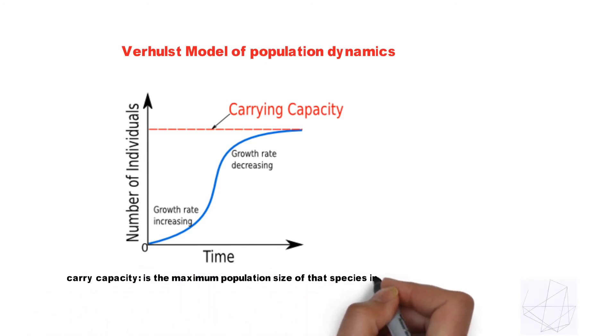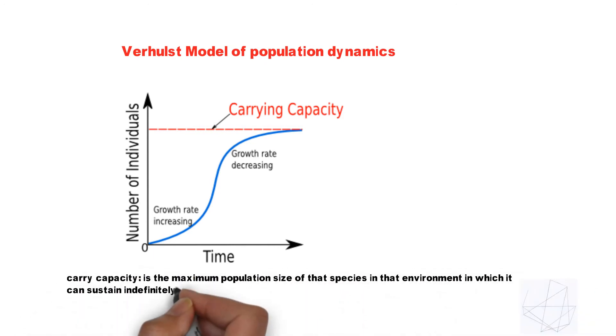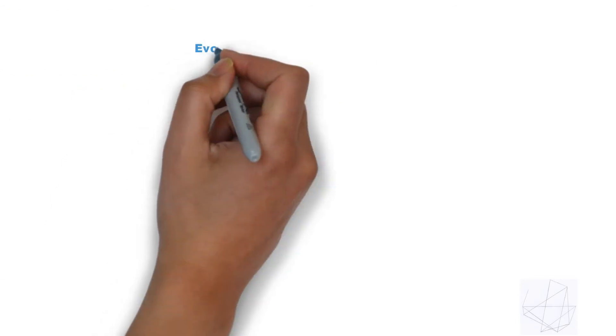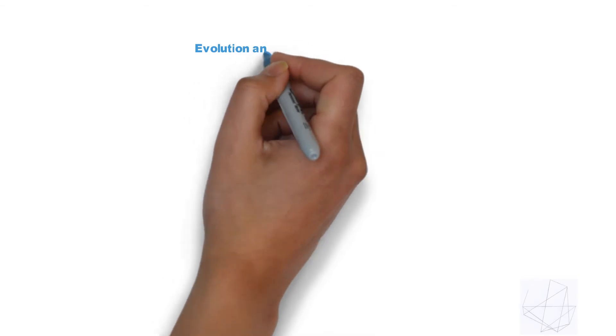Carrying capacity is the maximum population size of a species in an environment that can be sustained indefinitely, given the food, habitat, water, and other necessary resources to survive. When it comes to evolution and reproduction,